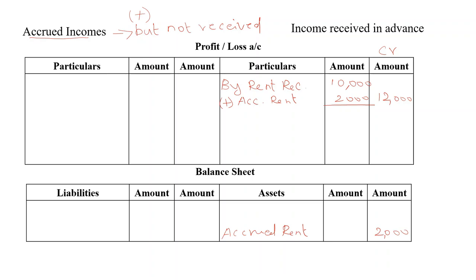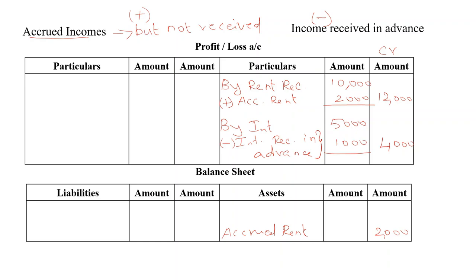Income received in advance means we did not yet earn that income but have already received payment before earning it. For this, we deduct it from the respective income. For example, if interest received is 5,000 rupees and interest received in advance is 1,000 rupees, deduct it — bring 4,000 to the outer column. The second effect: interest received in advance of 1,000 rupees is shown on the liability side of the balance sheet. So accrued income is added; income received in advance is deducted.